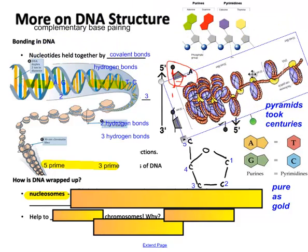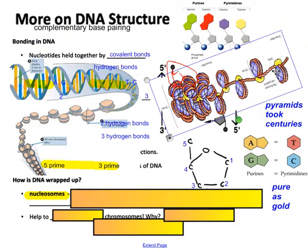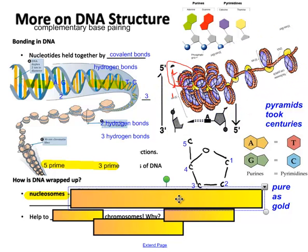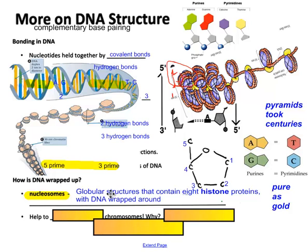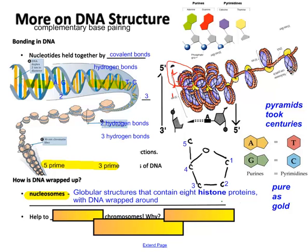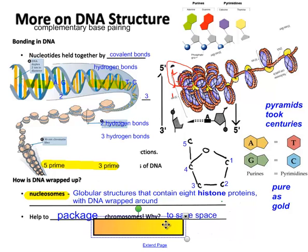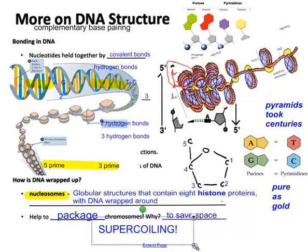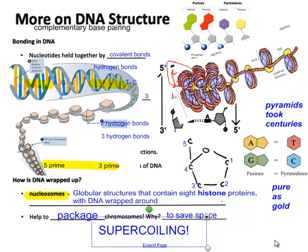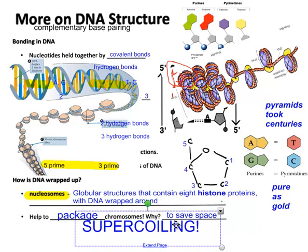Here's another diagram showing one such thing. And actually, each one of these has a little name. So each little ball with DNA wrapped around it is called a nucleosome. For now, it's just a simple globular structure that contains eight proteins, and we give these a name, they're called histone proteins. And there's DNA wrapped around them. The purpose is to help us package chromosomes to help save space and be able to fit them into the actual cell. So we call this supercoiling.